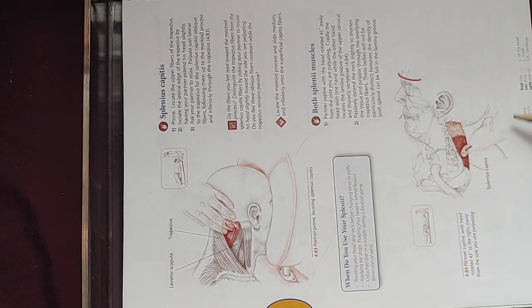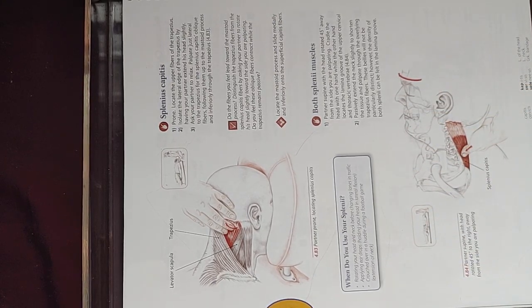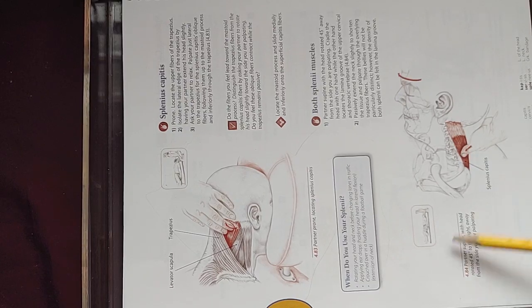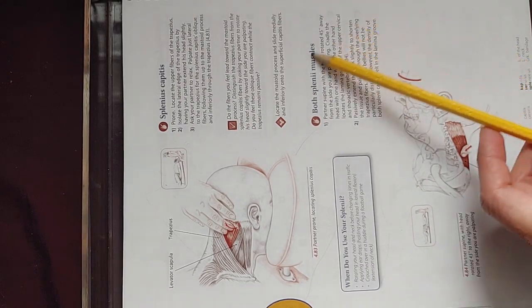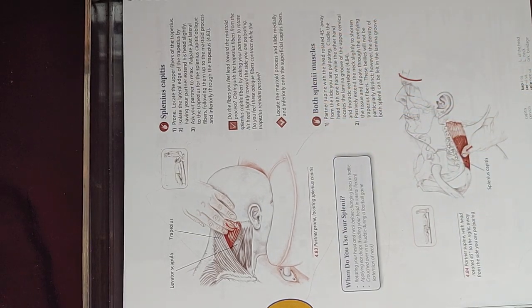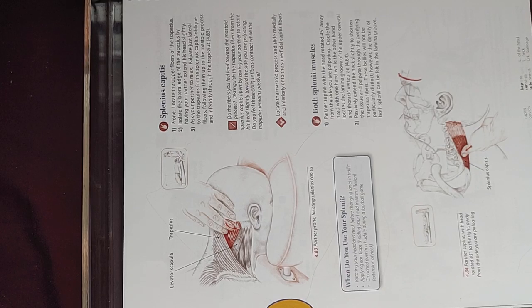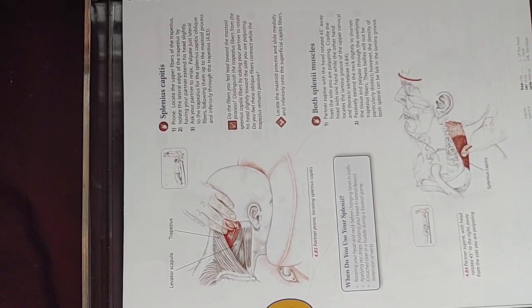Looking at the image here, the partner is in a supine position with the head rotated 45 degrees to the right, away from the side you are palpating. This applies to both splenius muscles. Cradle the head with one hand while the other hand locates the laminar groove of the upper cervical and thoracic vertebrae.